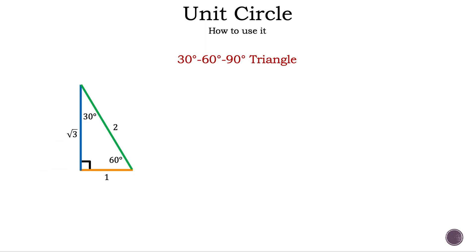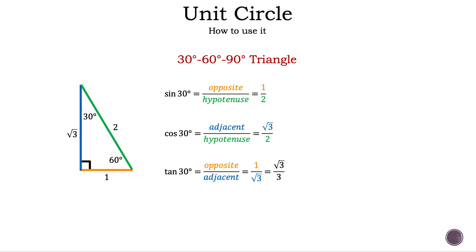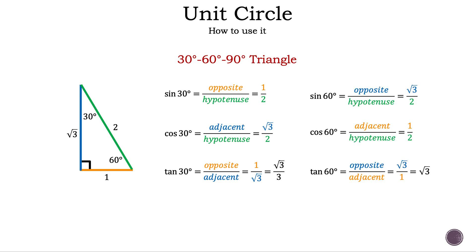Now we have our 30-60-90 right triangle. Using SOHCAHTOA, we can find sine, cosine, and tangent of 30 degrees. Sine of 30 degrees is 1 over 2. Cosine of 30 degrees is the square root of 3 over 2. And tangent of 30 degrees is the square root of 3 over 3. We can also find sine, cosine, and tangent of 60 degrees if needed.